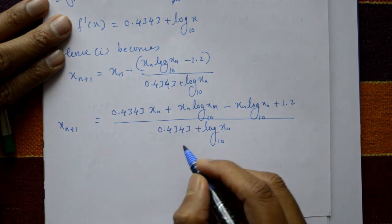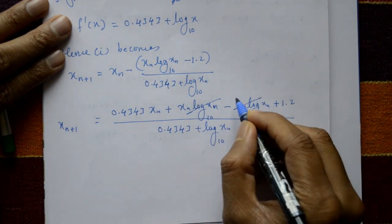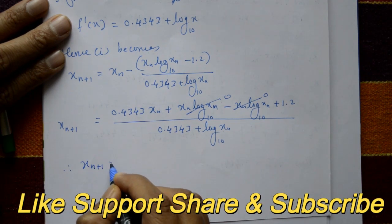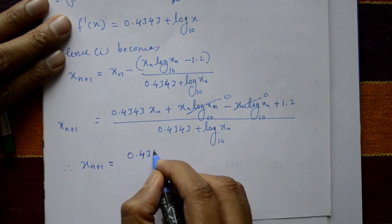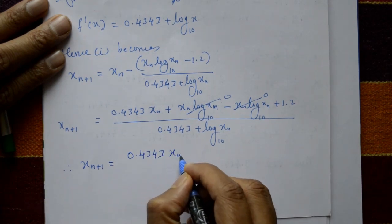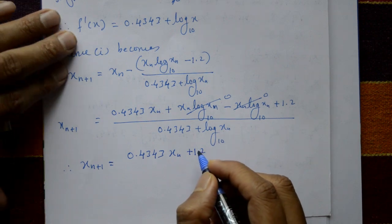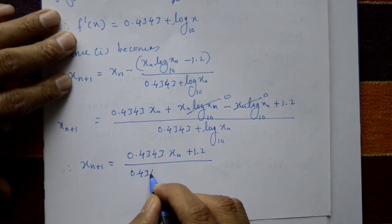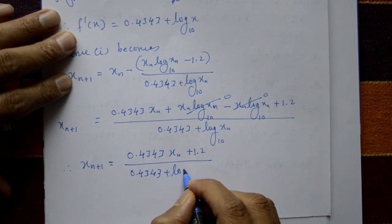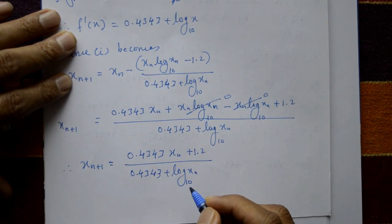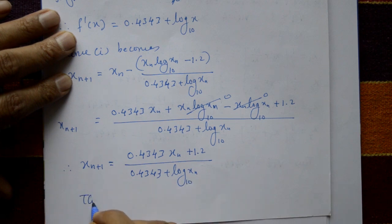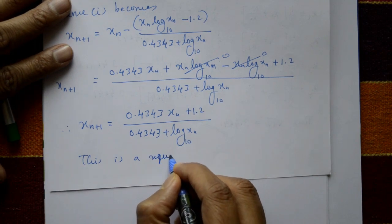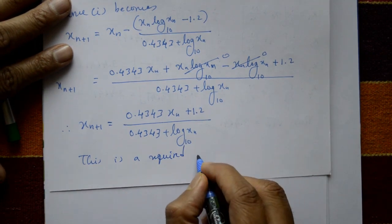The x_n·log₁₀(x_n) terms cancel. Therefore, the required iterative formula is: x_{n+1} = [0.4343·x_n + 1.2] / [0.4343 + log₁₀(x_n)]. This is equation number 2.